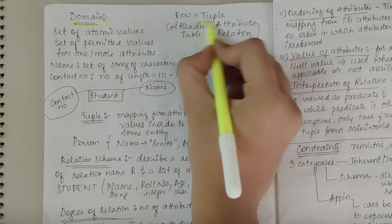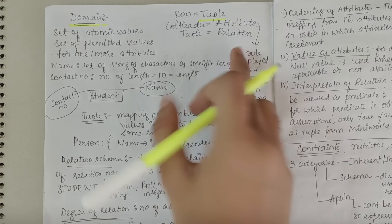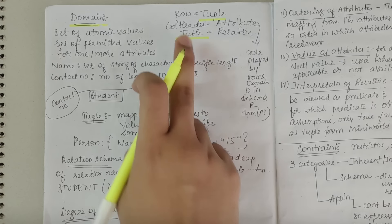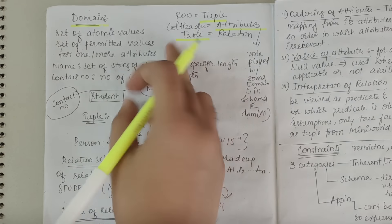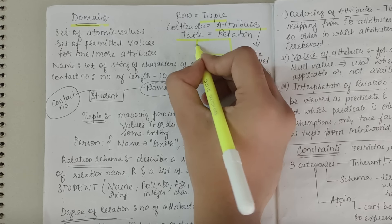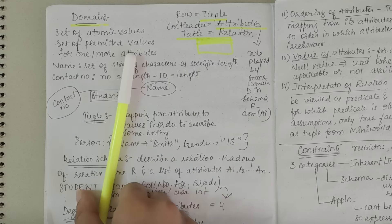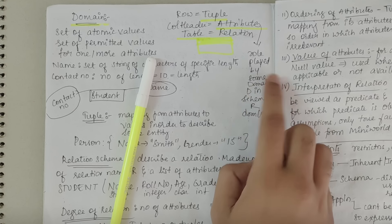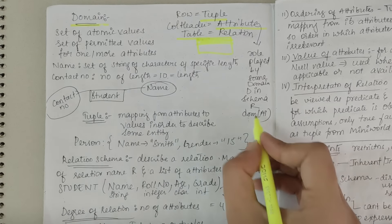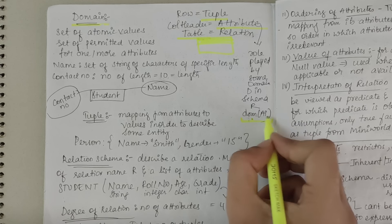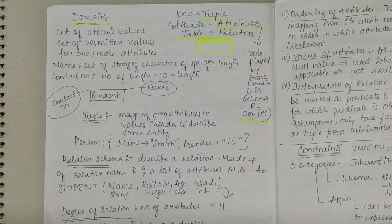Tuple refers to all the rows present in the relation. What is a relation? Relation is a combination of rows and columns — that is, the table. And what is an attribute? Attribute is the column header. Suppose this is a table — these are the attributes, which define the entities. The role played by some domain D in schema R is represented by DOM of A to Ai.